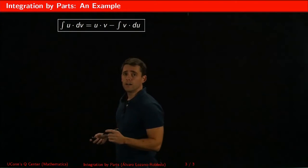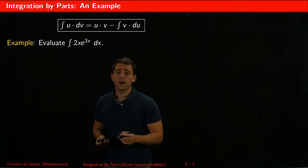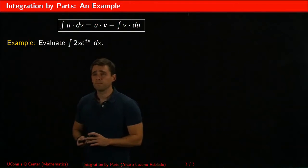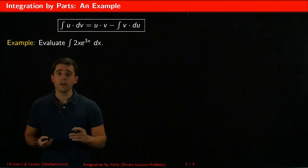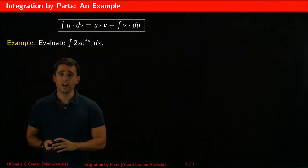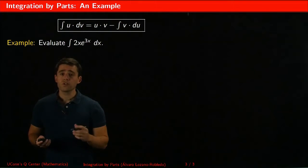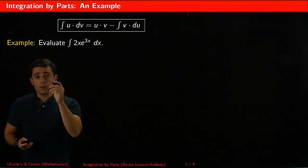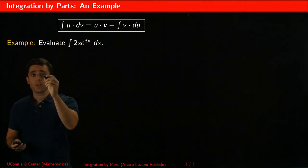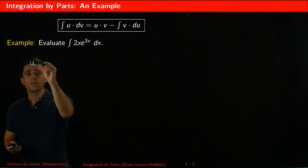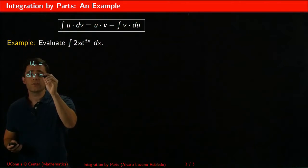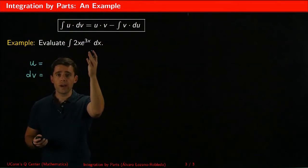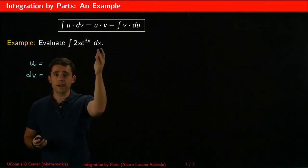So let's see one example of how to use integration by parts. In here you want to start by doing your choices of u and dv. What are my choices going to be? I'm going to pick a u and a dv such that together they have to multiply to 2x times e to the 3x dx.